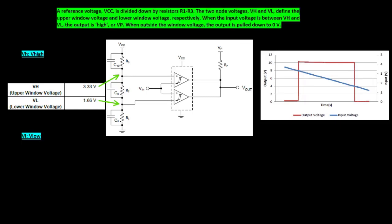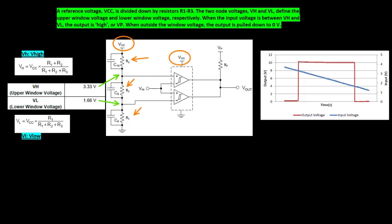A reference voltage VCC is divided down by resistors R1, R2, and R3. The two node voltages, VH and VL, define the upper window voltage and lower window voltage, respectively.